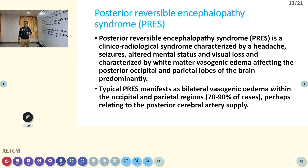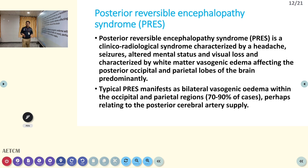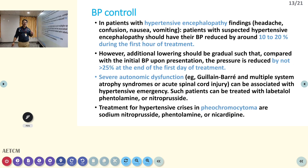Posterior reversible encephalopathy syndrome (PRES) is a radiological syndrome where some patients can have posterior circulation involvement, sometimes presenting with visual defects. It is due to vasogenic edema occurring in the posterior circulation. It can produce headache, seizures, altered mental status, and visual loss. Any patient with high BP and visual loss — always think about PRES syndrome. For hypertensive encephalopathy, BP should be reduced around 10 to 20 percent during the first hour of treatment, and then up to 25 to 40 percent can be reduced over 24 hours.